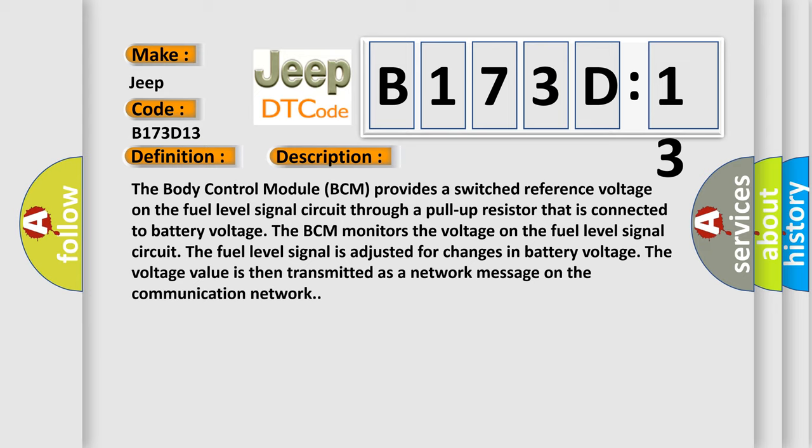The body control module BCM provides a switched reference voltage on the fuel level signal circuit through a pull-up resistor that is connected to battery voltage. The BCM monitors the voltage on the fuel level signal circuit. The fuel level signal is adjusted for changes in battery voltage. The voltage value is then transmitted as a network message on the communication network.